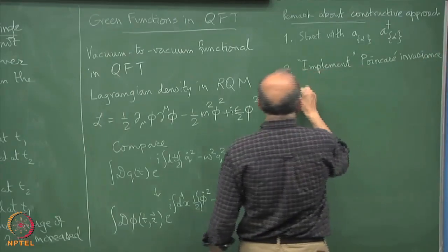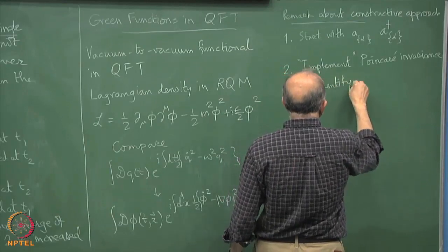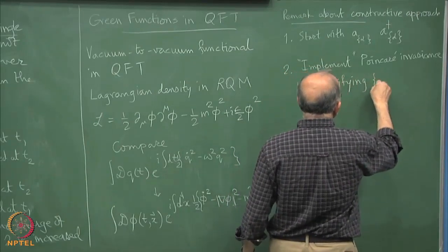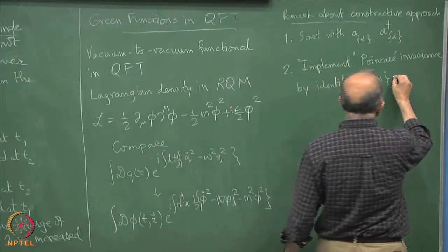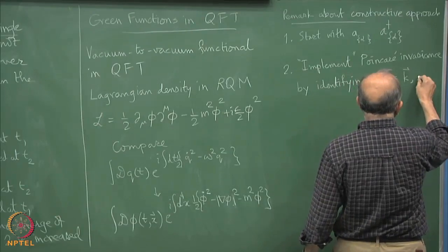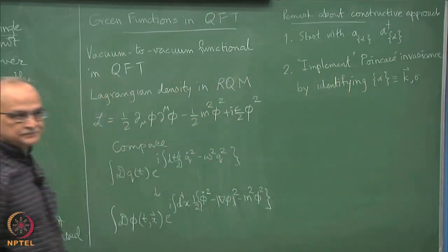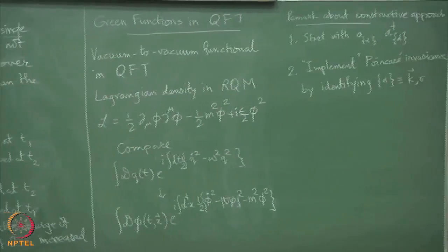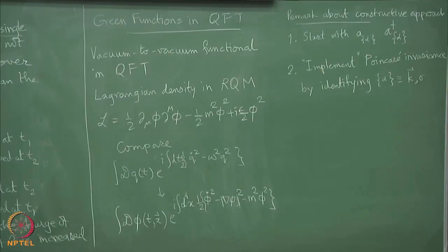we start with, you remember that we argued that if you have weakly coupled system, it always boils down to introducing A and A daggers corresponding to single particle set of Eigen values. But now we implement Minkowskian invariance by identifying this Eigen value set alpha with momentum k and sigma spin. These are single particle attributes.